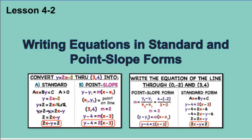Lesson 4-2, writing equations in standard and point-slope form. We have two different forms: standard form and point-slope form. Standard form is AX plus BY equals C, where A has to be greater than 0. Point-slope form is Y minus Y1 equals M times X minus X1. We've already gone through slope-intercept form, so these are some other formats that you can use.